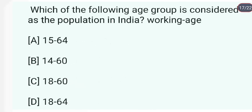Which of the following age group is considered as the working age population in India? Working age population in India is from 15 to 64. Those below 14 and above 65 are considered as non-working population.